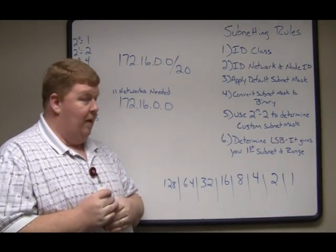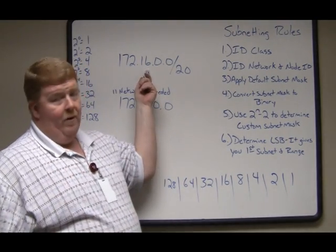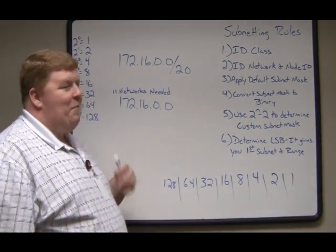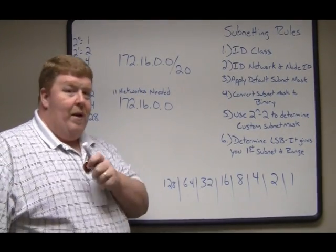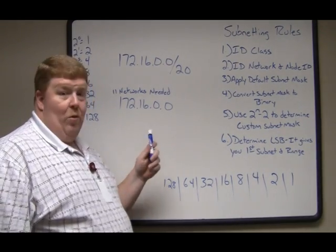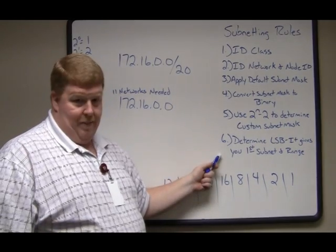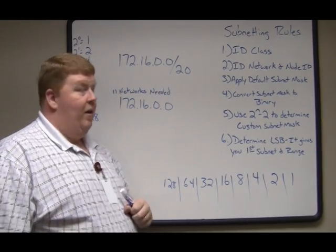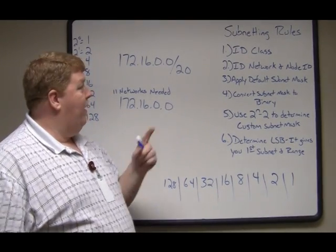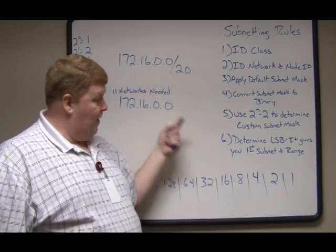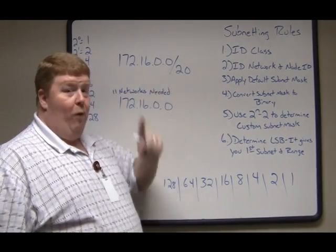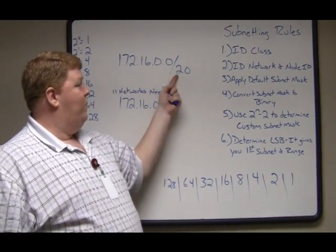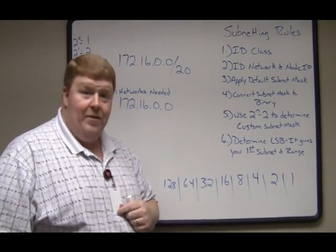When dealing with subnetting, there are two basic types: the easy way and the hard way. The hard way is not actually very hard — it just means you need to go through all six steps. To subnet the easy way, whenever you see a subnetting problem with a slash and a number at the end, you can skip to step six because steps one through five have already been done for you. So the hard way uses all six steps; the easy way, you only go to step six.